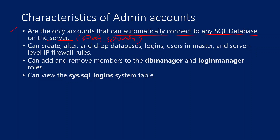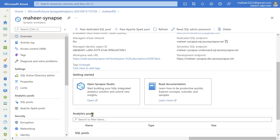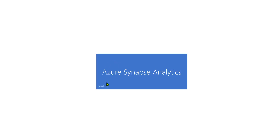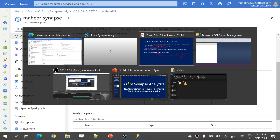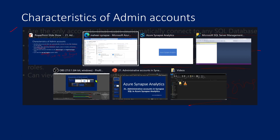These accounts have permissions to create, alter, and drop databases, or they can create logins and users in the master databases. These IDs can also update IP firewall rules for the servers. These two IDs can help you add any new users or new logins to the DB Manager or Login Manager roles. Also, these accounts are capable of viewing details from the system table — this is the system table which gives a list of all logins available inside your SQL server. Let me go to my workspace and open Synapse Workspace Studio to practically execute this query on top of this system table.